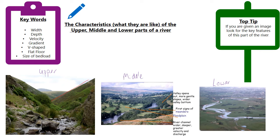Starting with the upper course, there are a couple of things you should really be looking for. We've got a really clear V-shaped valley — it makes a V-shape — and you can see, just like when we went to Carding Mill Valley, you've got these interlocking spurs. That's because in the upper part of the river, the river hasn't got much energy, and so if it tries to go past any hard rock it can't erode through it and has to go around, creating these spurs.